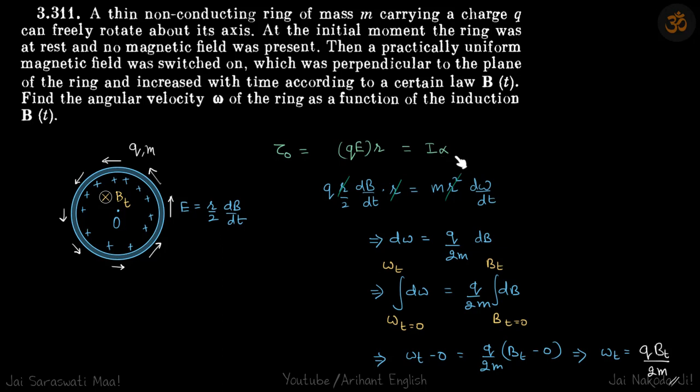Times r equals I, which is mr² for a ring, and α can be written as dω/dt. So r will get cancelled and we get dω = (q/2m)dB.